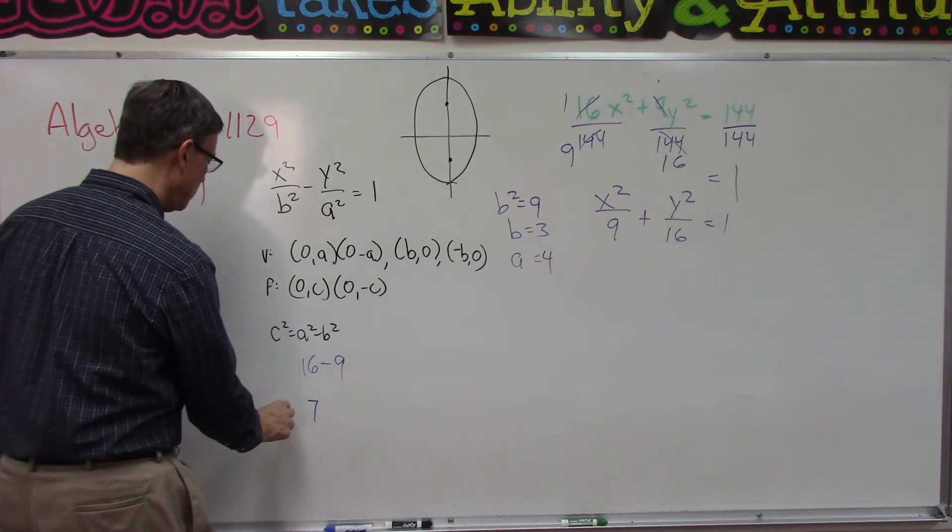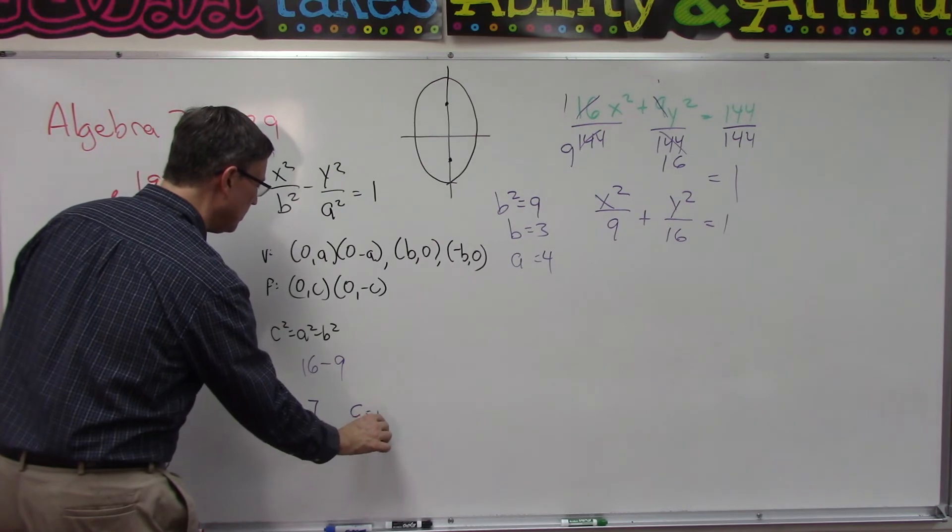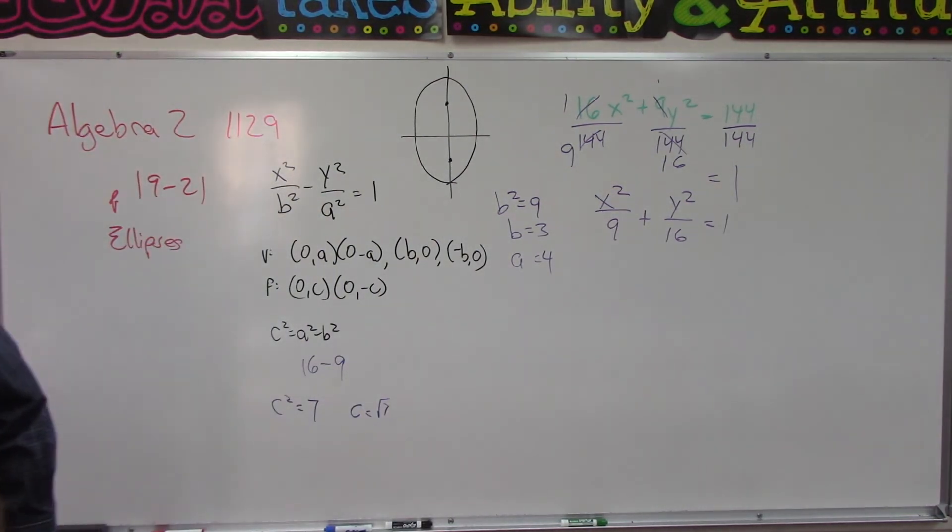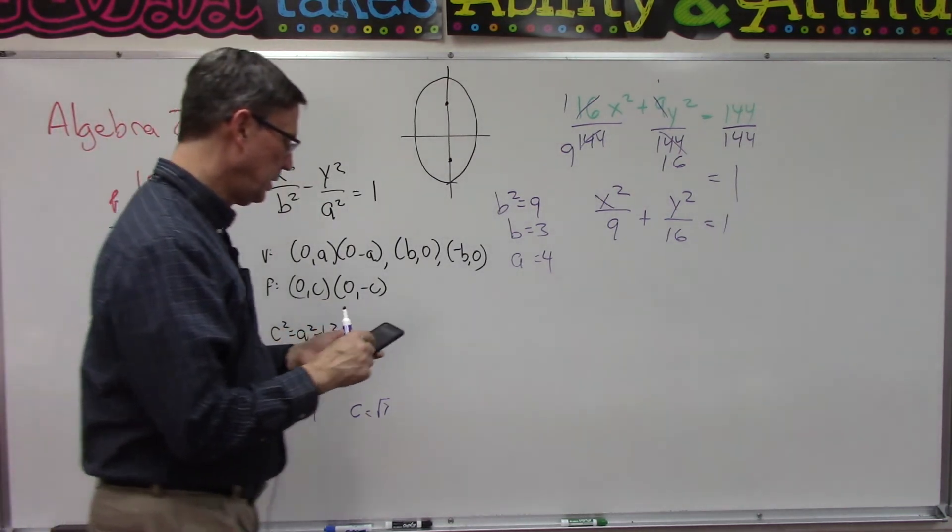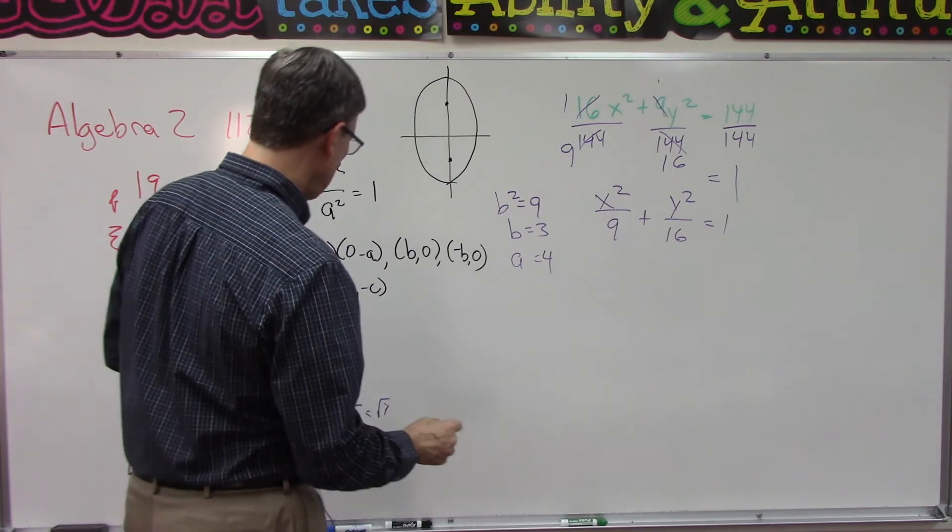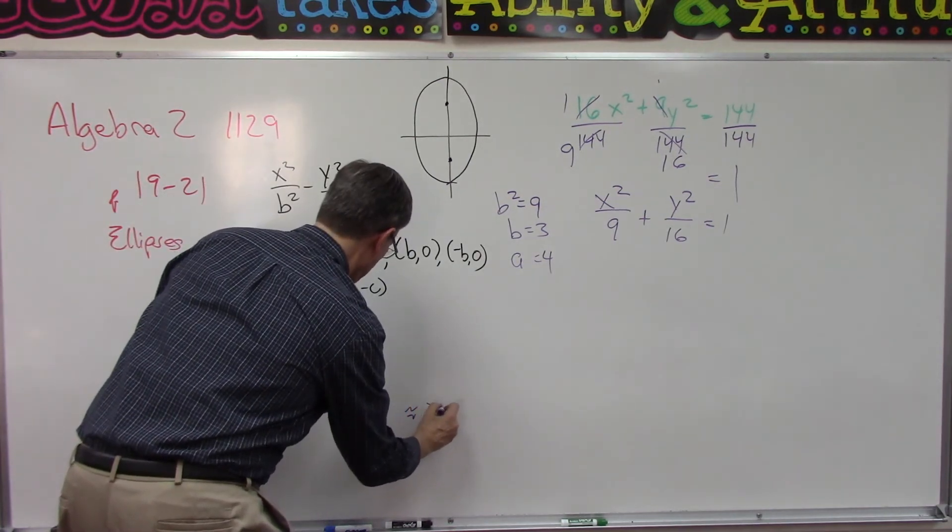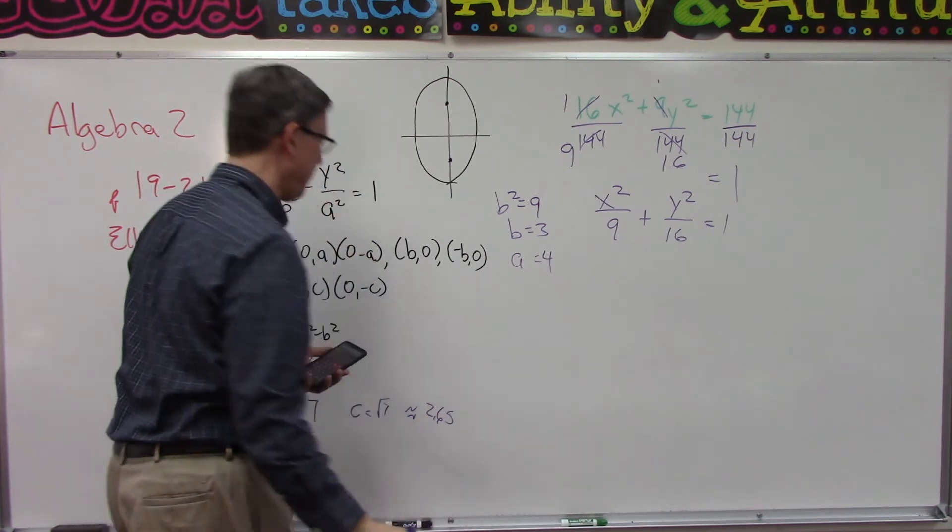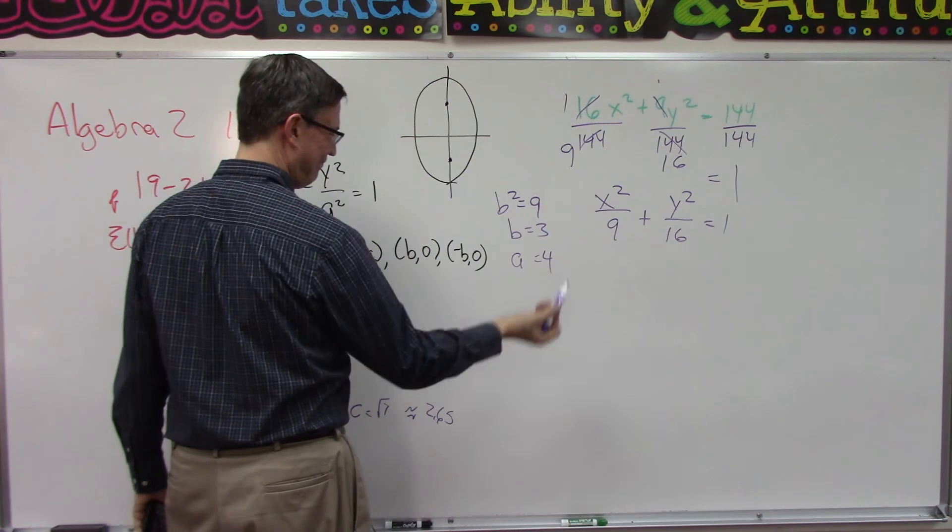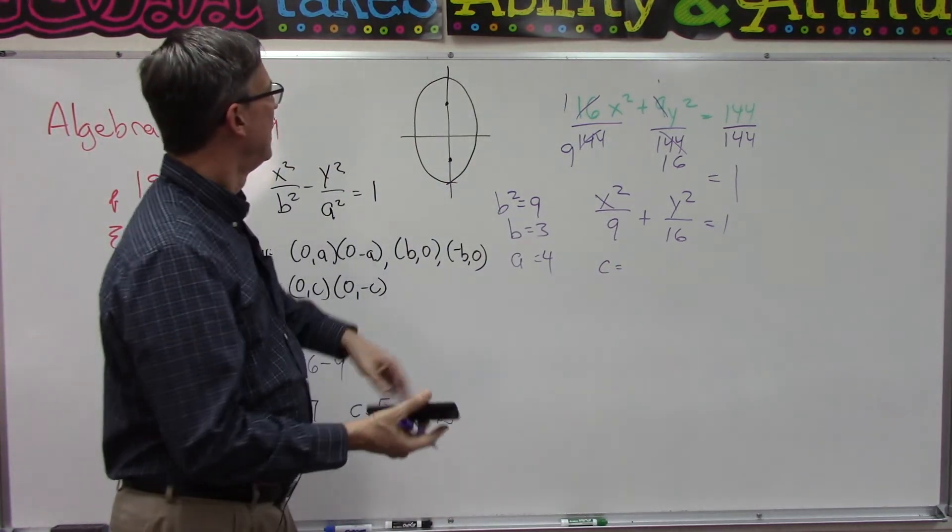So c squared equals 7, which means c equals the square root of 7. Let me grab my calculator because they want us to take that out to two decimal places. That's approximately 2.65.